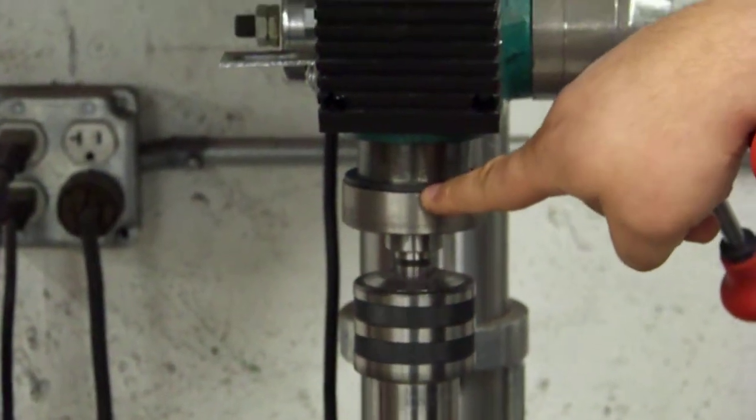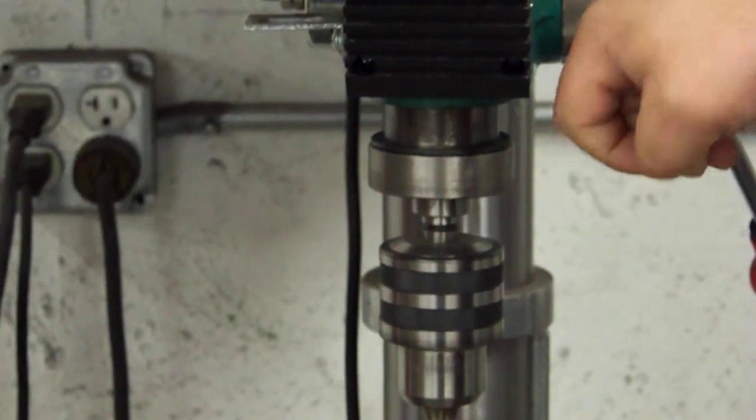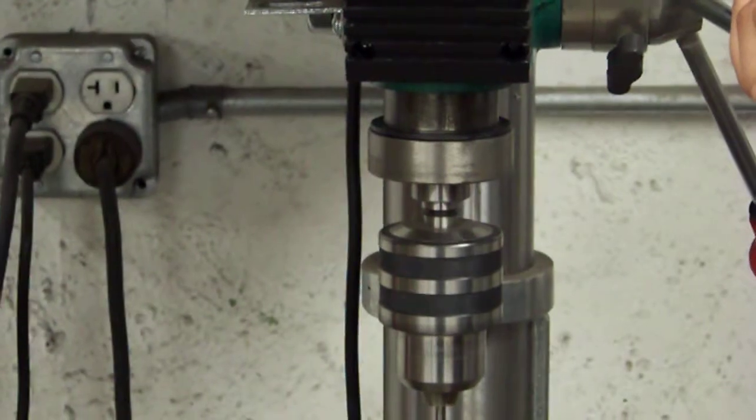And as you can see, this part does not rotate, allowing the Morse taper, or in this case, the Jacobs taper to lock onto the multiple spindle head.